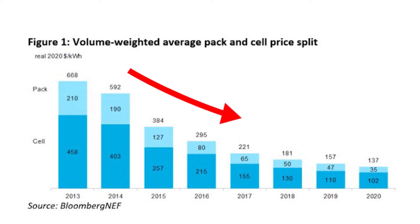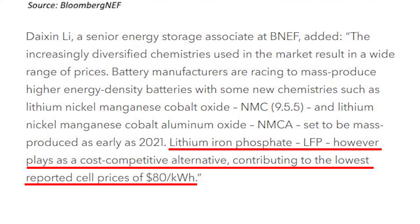According to Bloomberg New Energy Finance's annual battery price survey, Li-ion battery pack prices above $1,000 per kilowatt-hour in 2010, but in 2020 the price decreased by 89% to $137 per kilowatt-hour. The report also listed lithium-ion phosphate batteries as a cost-competitive alternative, with the cheapest source price of $80 per kilowatt-hour.